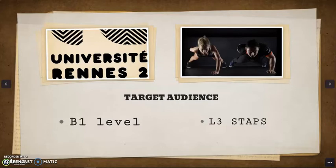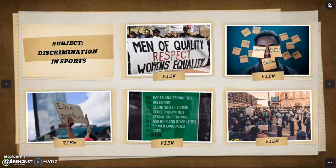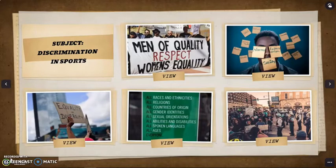However, we consider that it can be easily adaptable in different domains if the linguistic objectives and the subject meet the students' and teachers' needs. This online language game takes students through an English learning sequence involving the subject of discrimination in sports. During four sessions, students will learn in a very dynamic and ludic way about the different types of discrimination in the sports domain while improving their English language skills. They will have the opportunity to practice their oral and written expression and comprehension through diverse activities, which will give them the tools to participate in the final task — a debate in the form of a trial.